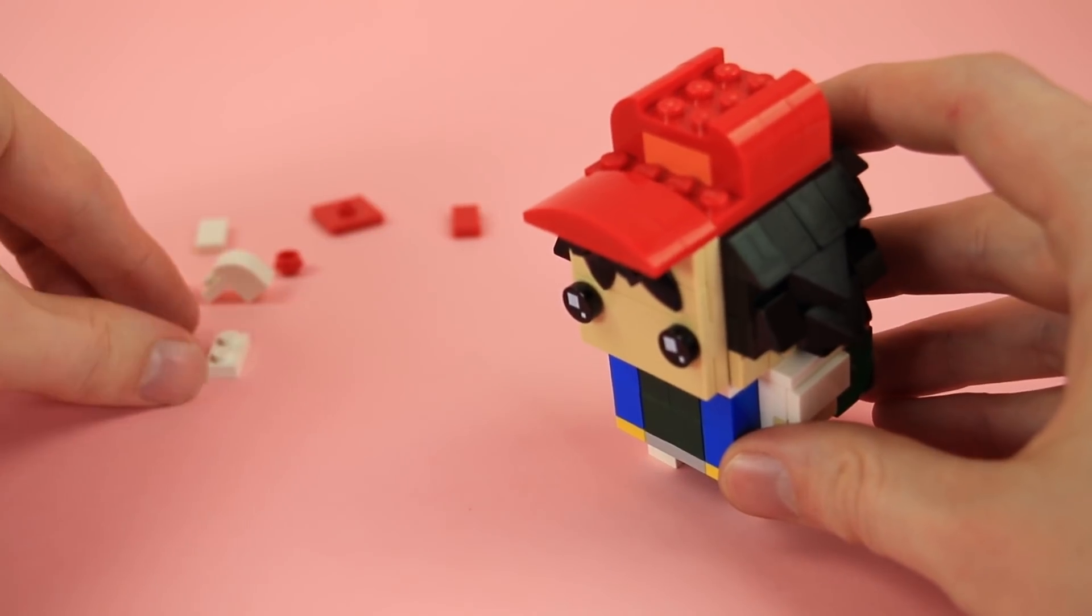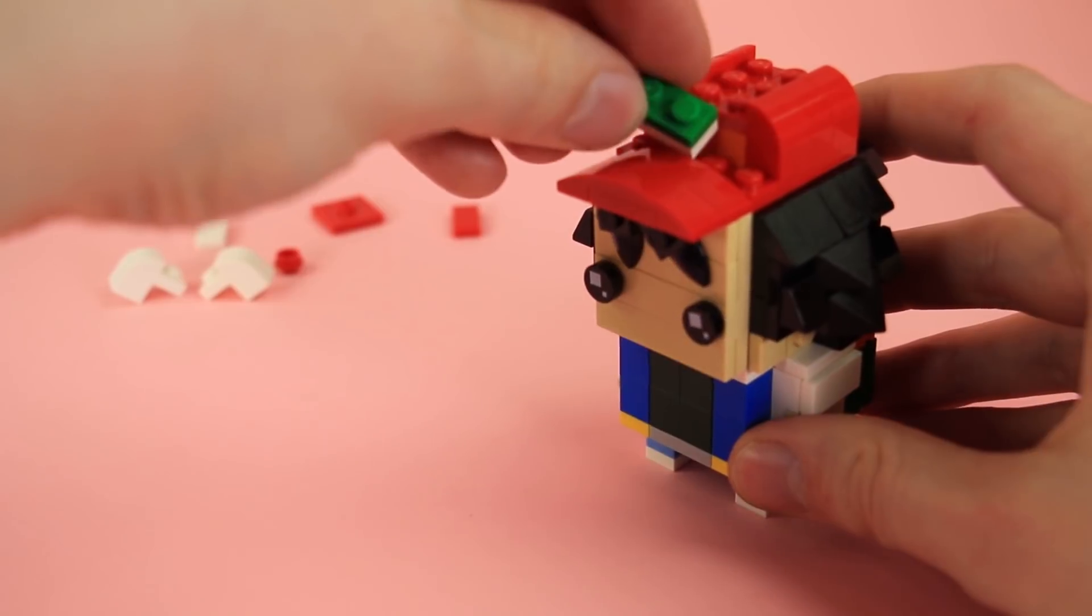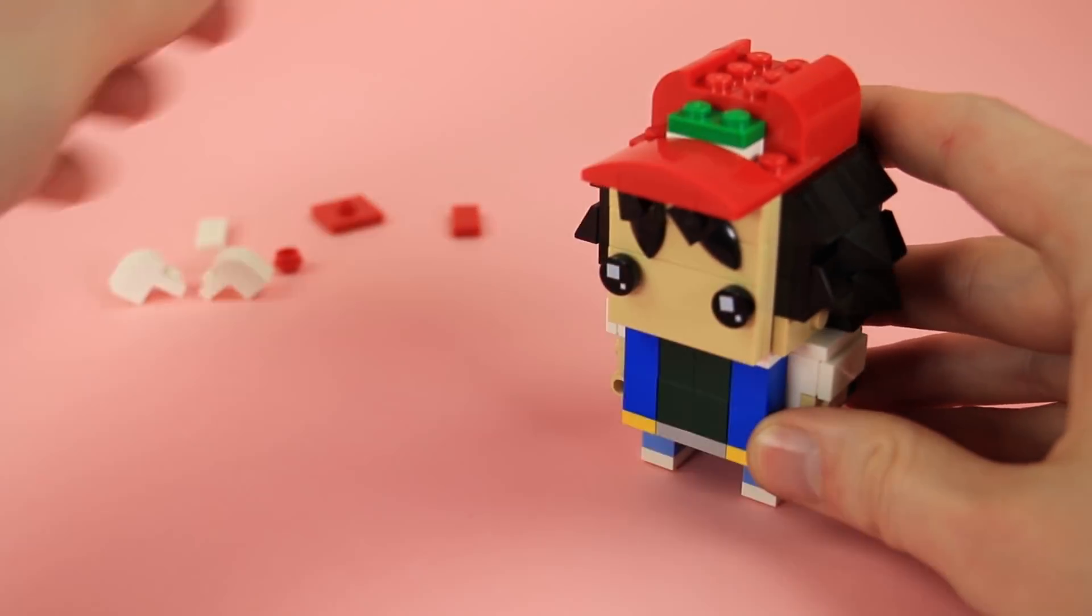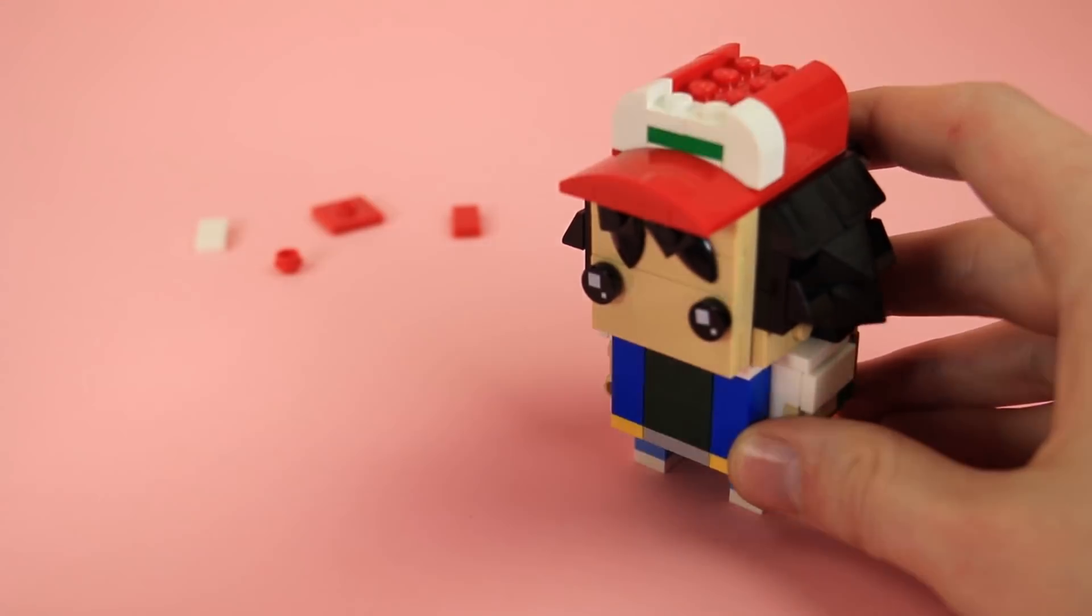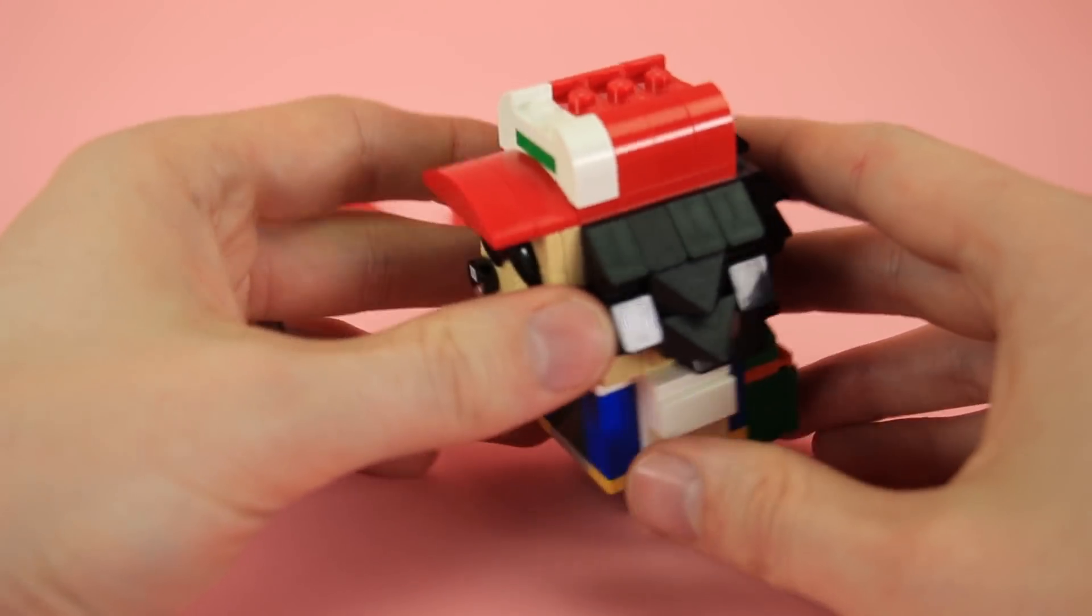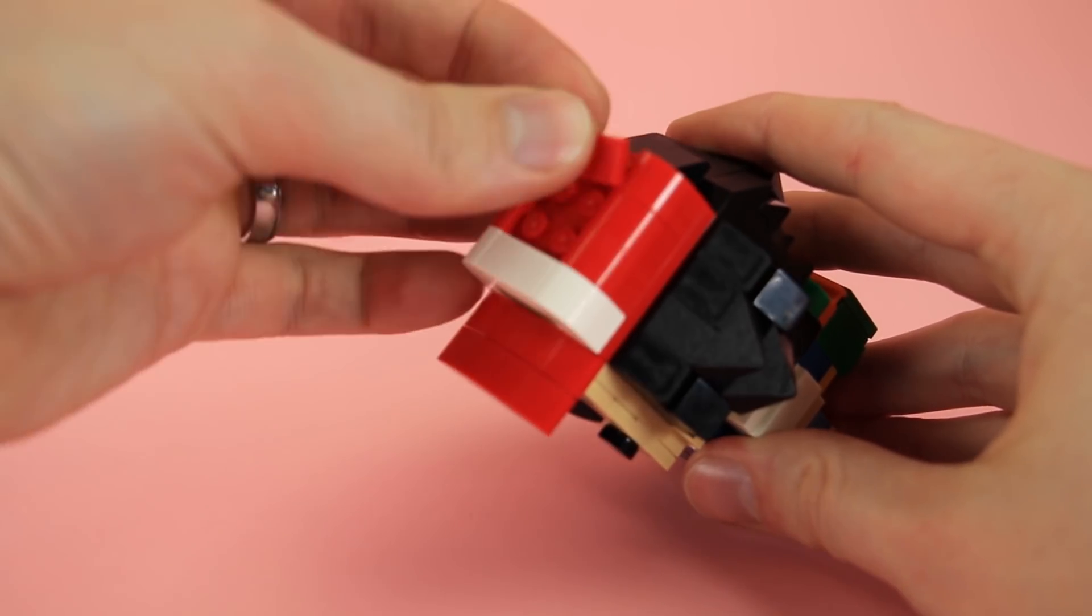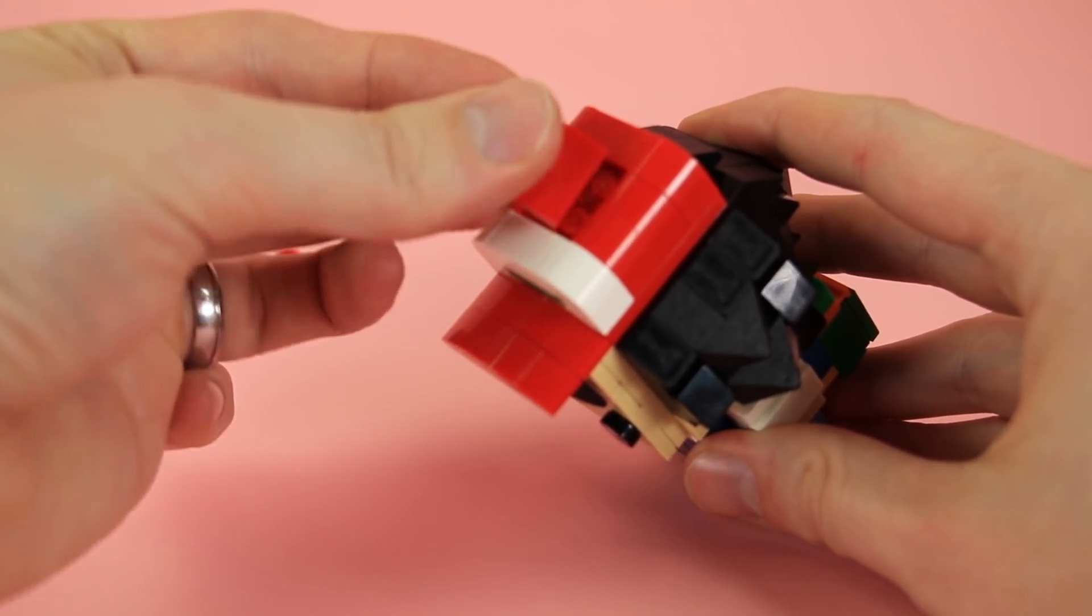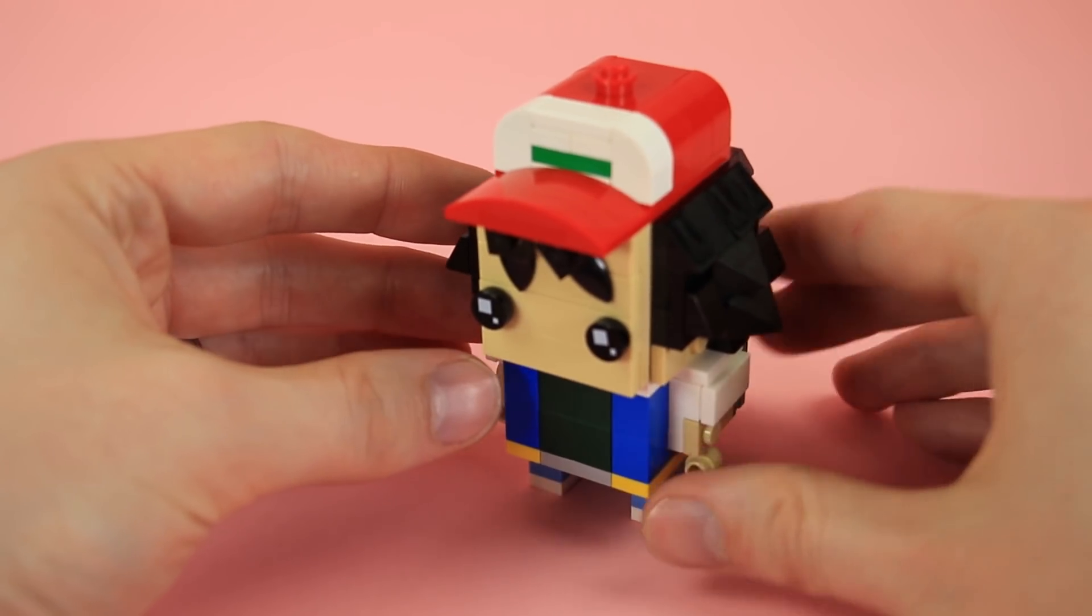And then in the front we'll take a white plate and a green plate. Get that little bit of detail in the hat. Then some white curvy arches on top. And on the very top some tiles. White 1x2, red 1x2, a 2x2 red jumper, and to top it all off a little 1x1 red round plate.